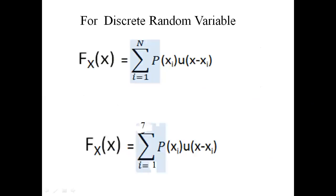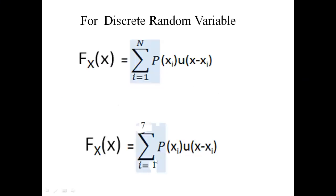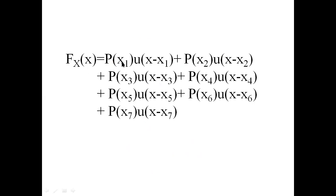This belongs to a discrete random variable. The distribution function is also known as the cumulative distribution function — cumulative means we are adding the previous probabilities also. The formula is: F(x) = summation i=1 to n of P(xi) · u(x − xi). By expanding this summation we get P(x1)·u(x−x1) + P(x2)·u(x−x2) and so on.